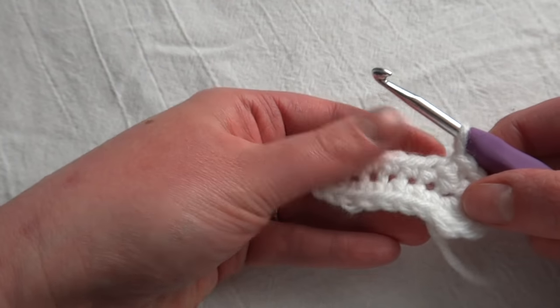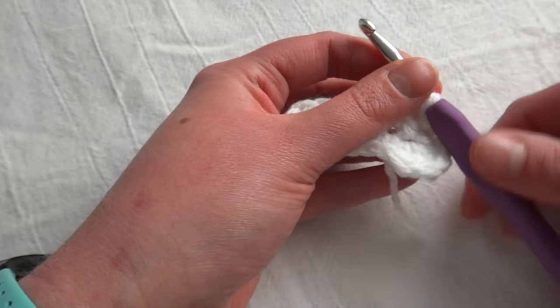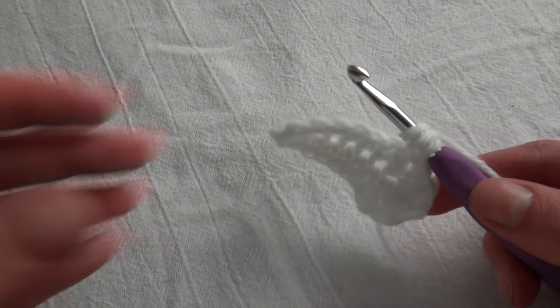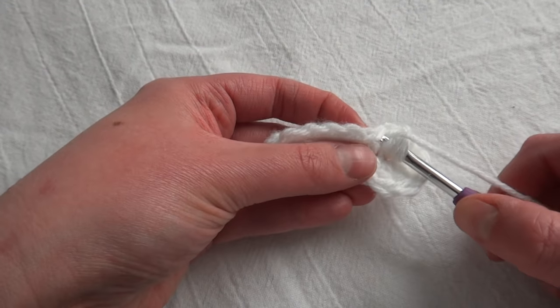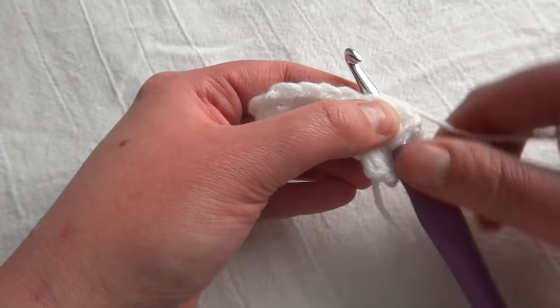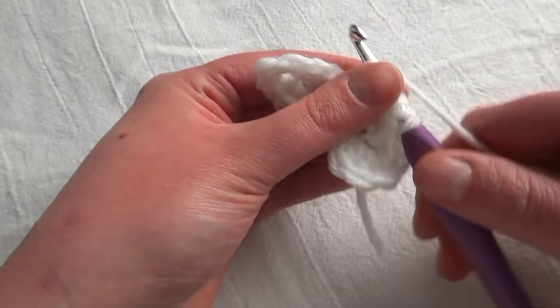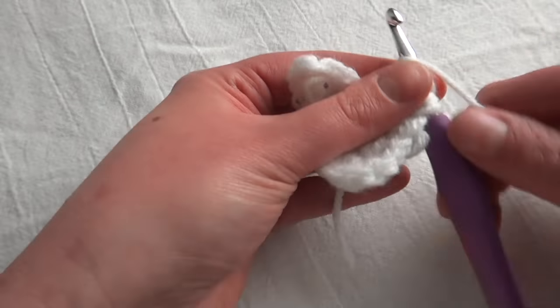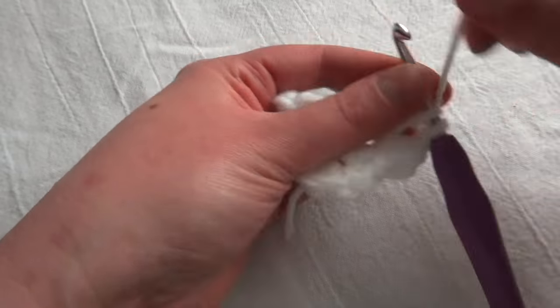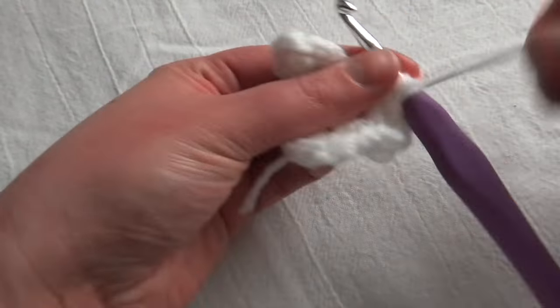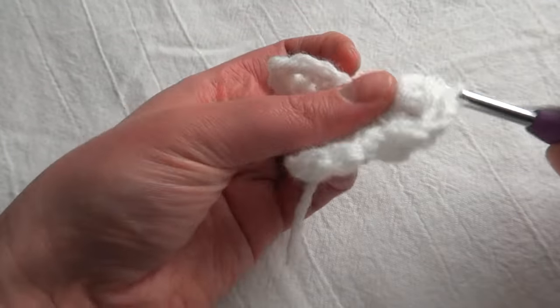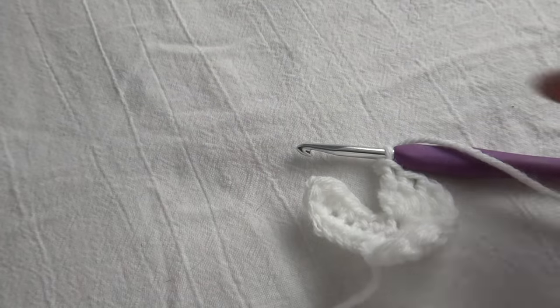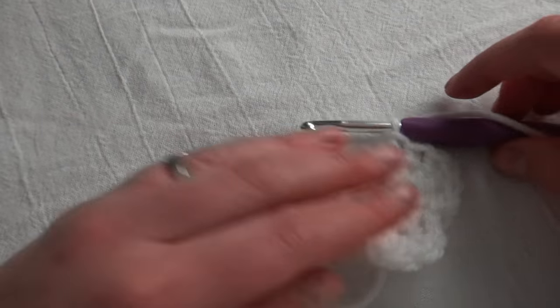And then we're going to do some treble or triple crochets. So to start these, you're going to yarn over twice. And then in that first single crochet, we're going to do six treble or triple crochets. So here's our second little cloud puff.